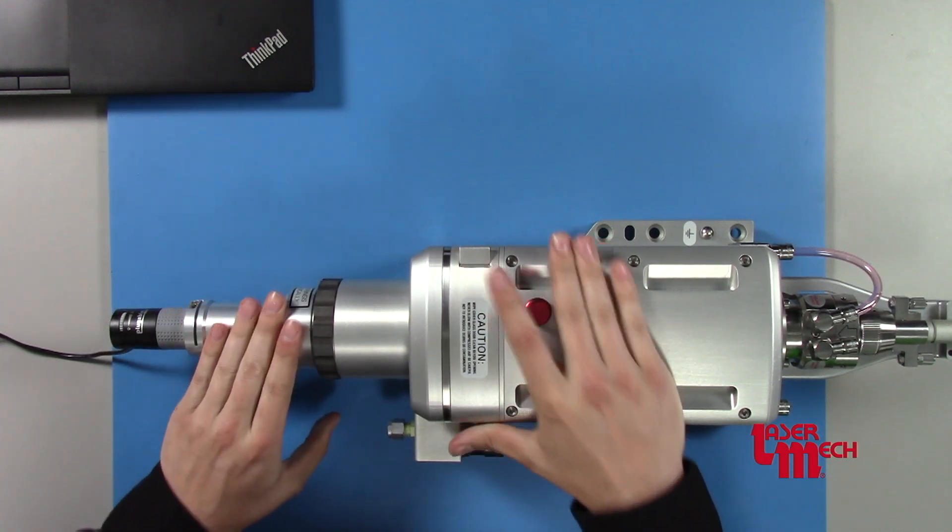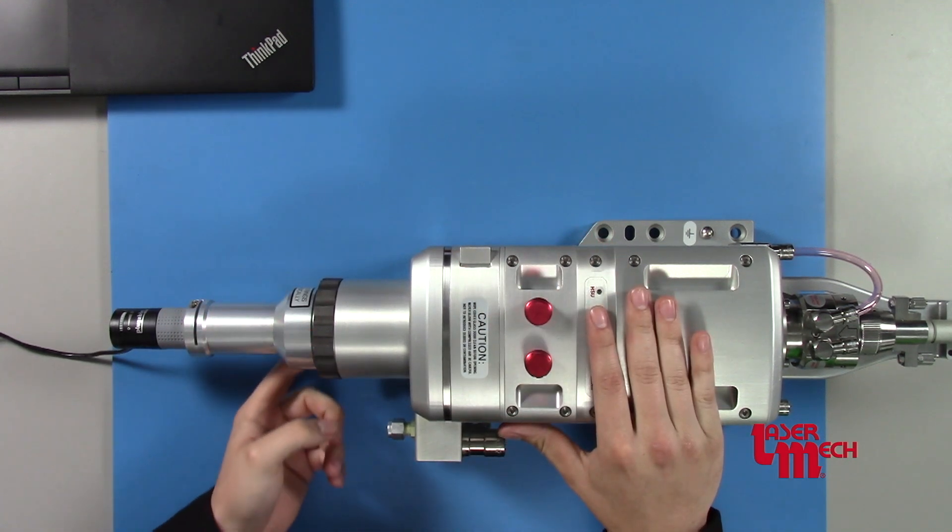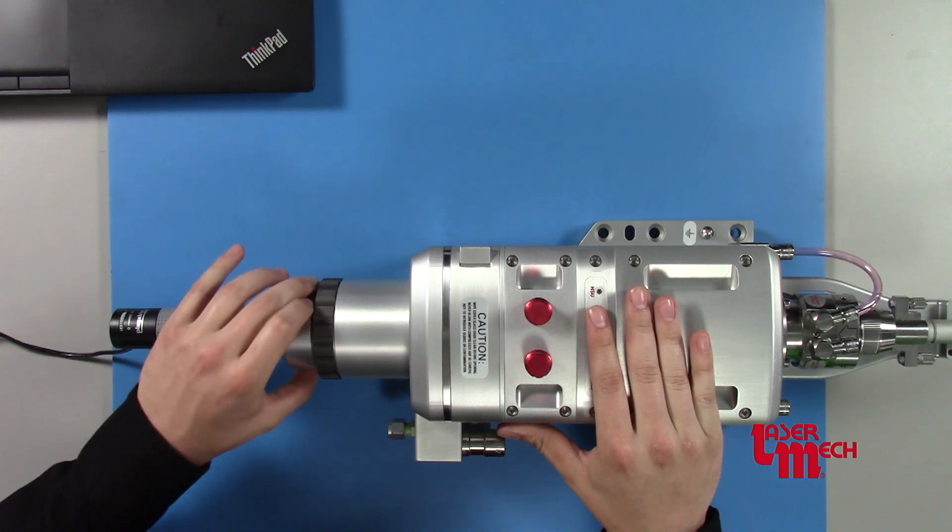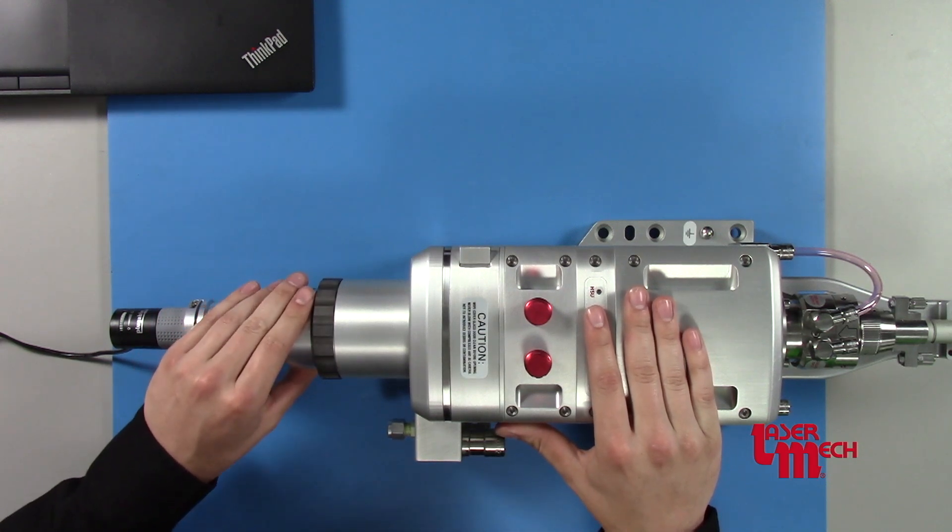Get that nice and tight. You're going to want it nice and snug all the way around, flush with the TRA nut, so everything's straight and good to go.